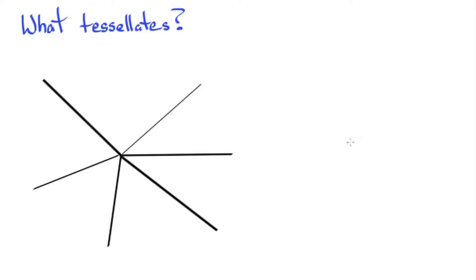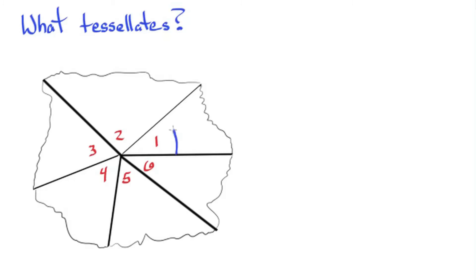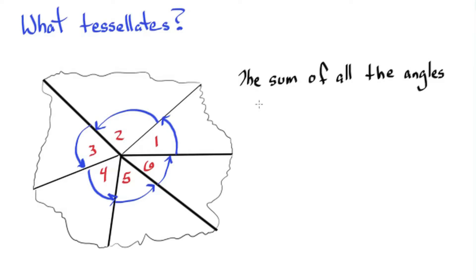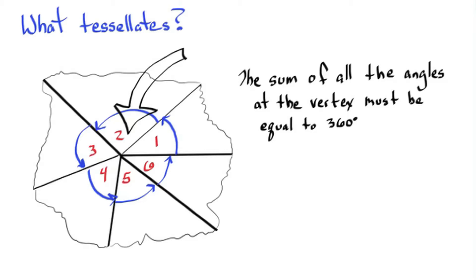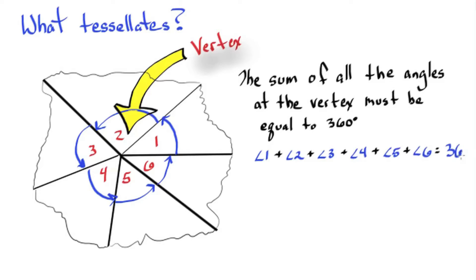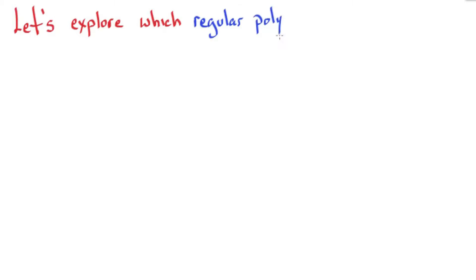What tessellates? Imagine we have a point on a plane where many vertices of angles meet. We know that the sum of the angles at the vertex must be equal to 360 degrees because it makes a full circle. So angle 1 plus angle 2 plus angle 3 plus angle 4 plus angle 5 plus angle 6 equals 360 degrees. Let's explore which regular polygons tessellate.